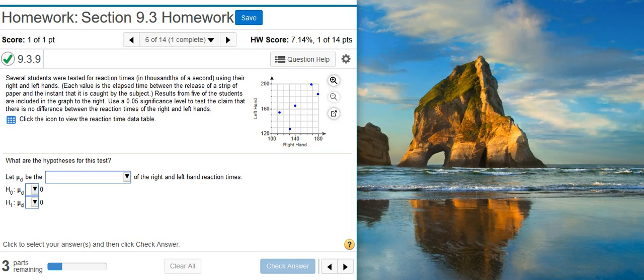Several students were tested for reaction times in thousands of seconds using their right and left hands. Each value is the elapsed time between the release of a strip of paper and the instant that it is caught by the subject. Results from five of the students are included in the graph to the right. Use a 5% significance level to test the claim that there is no difference between the reaction times of the right and left hands.